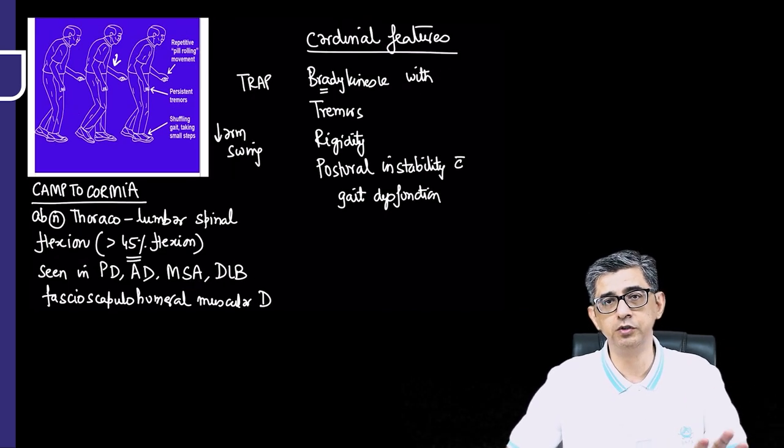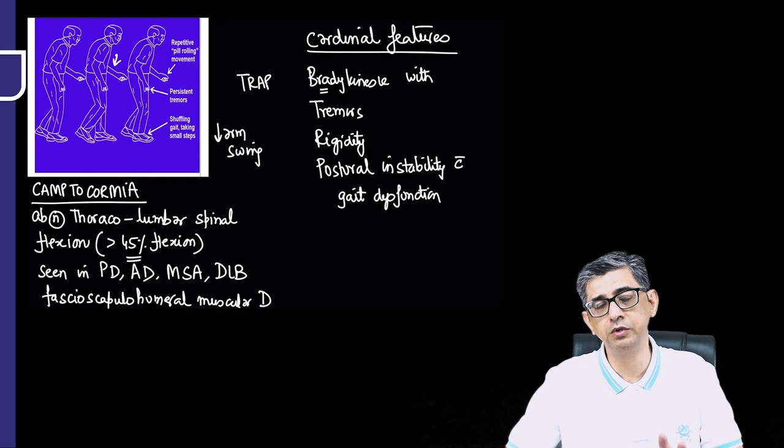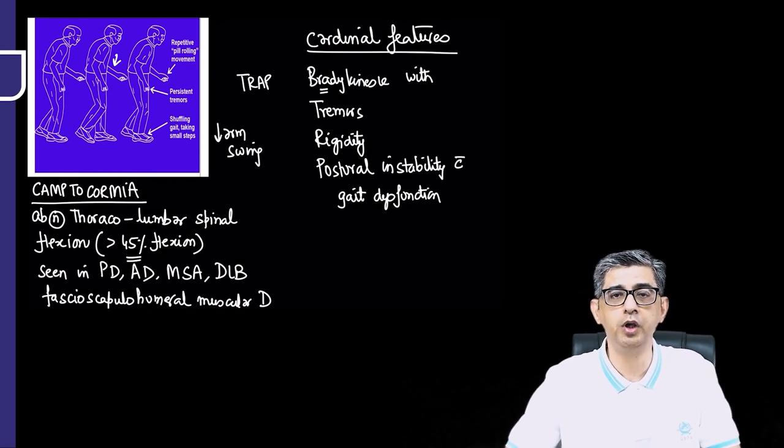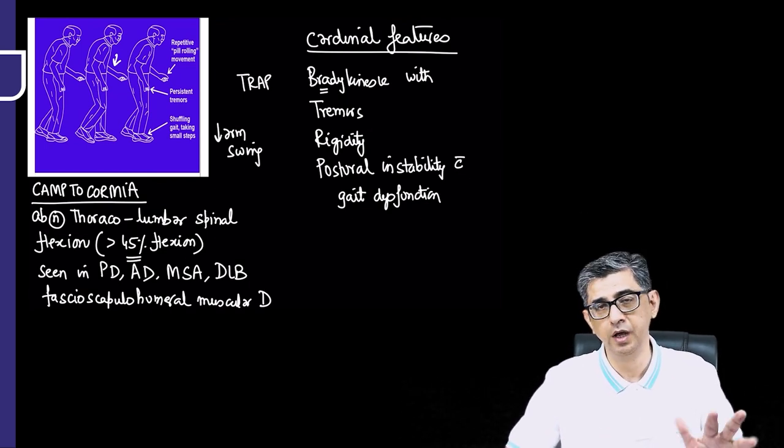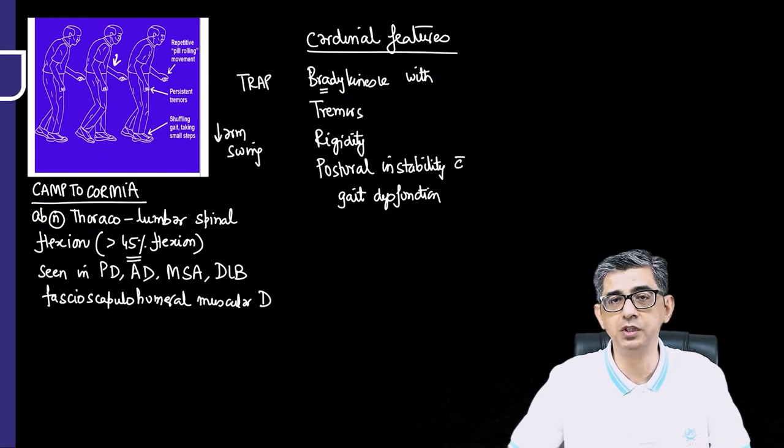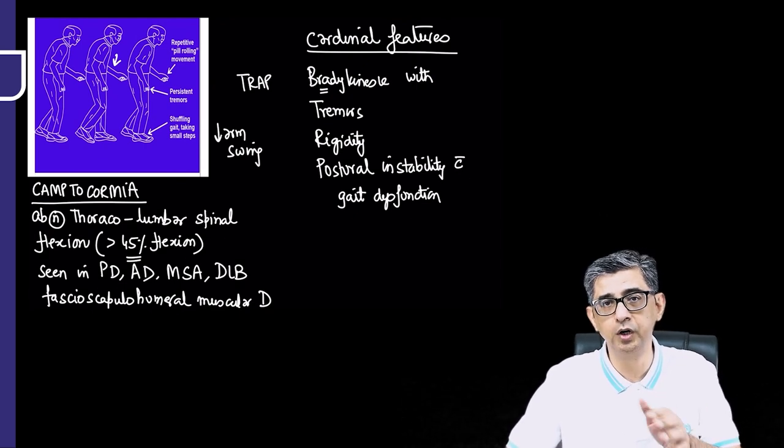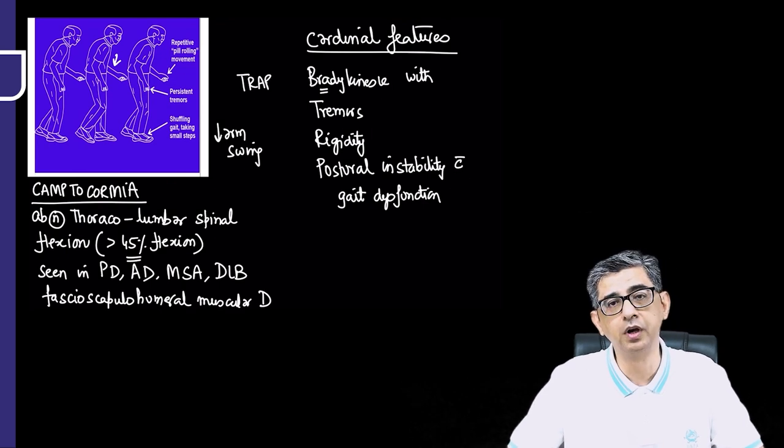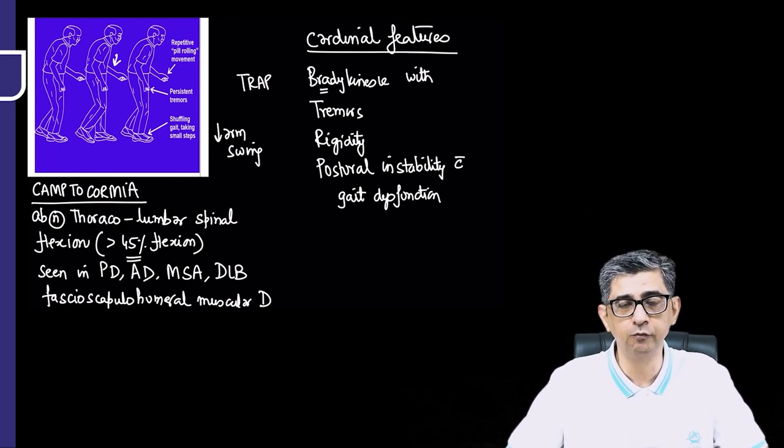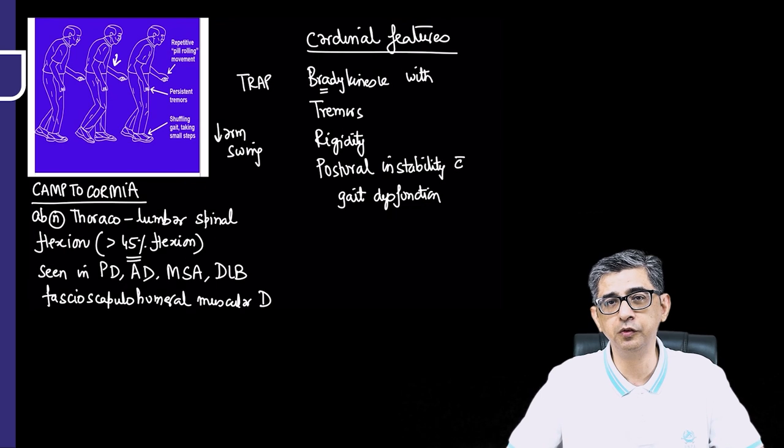If there was a genuine spine deformity, a person with genuine spine deformity cannot be able to lie supine like a normal person. But in these patients, when they lie supine, this postural component of the spine flexion would tend to disappear.